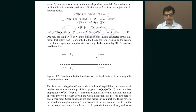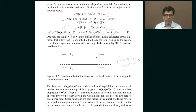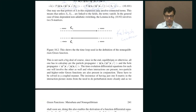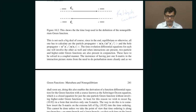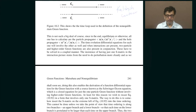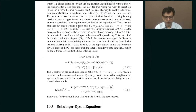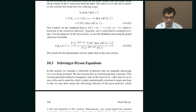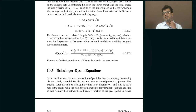This is called the Keldysh contour. I am going to explain this in the next class. In the next class I will tell you more about what this Keldysh contour is and see where we can go from there. This basically tells you more details about non-equilibrium Green's functions.